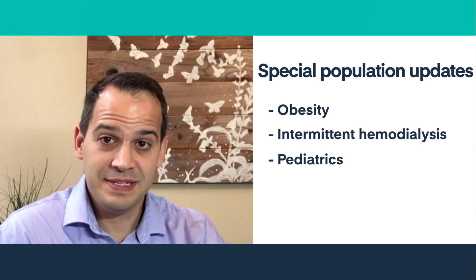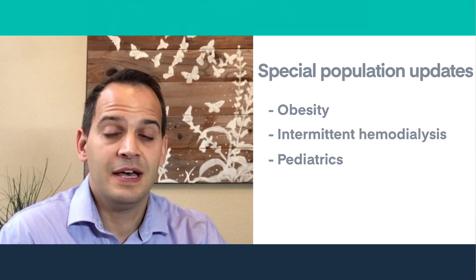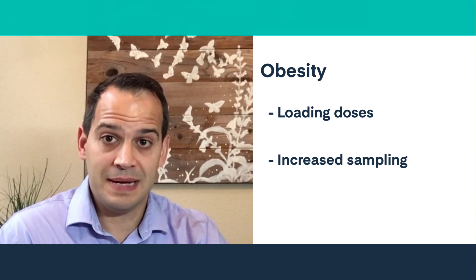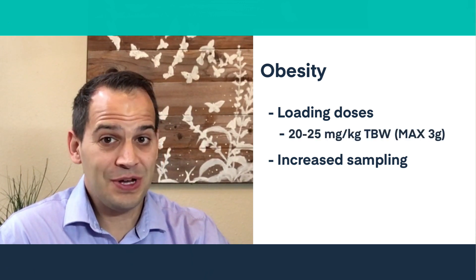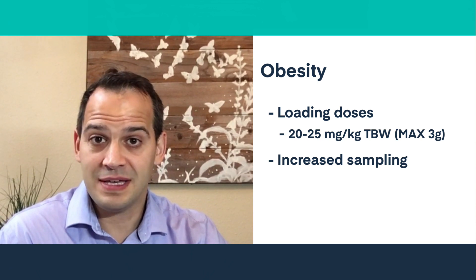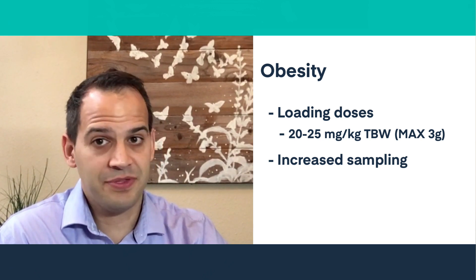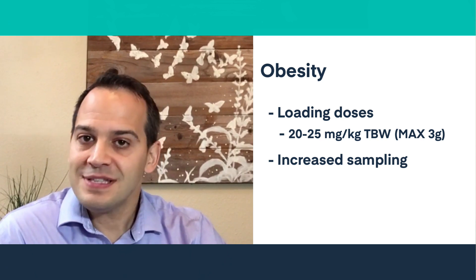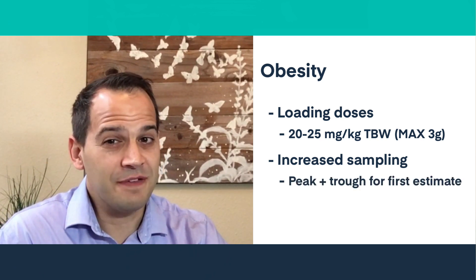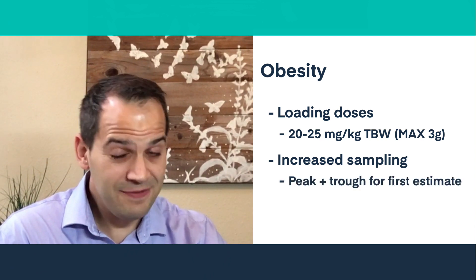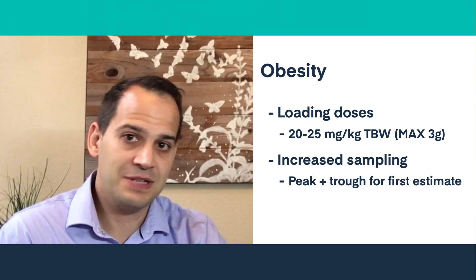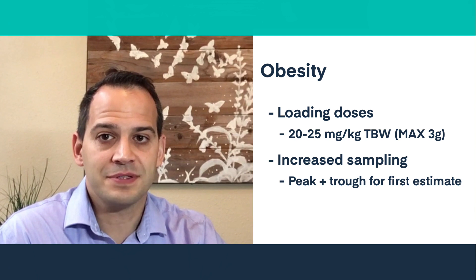Next up, some quick guideline highlights for obesity, renal disease, and pediatrics. For obesity, the guidelines emphasize loading doses and more sampling. They recommend loading doses of 20 to 25 mg per kg of total body weight with a maximum of 3 grams. For sampling, they suggest including both a peak and a trough for the first AUC estimation, even when using Bayesian software. After that initial estimate, with Bayesian software, you can usually go back to just single levels.